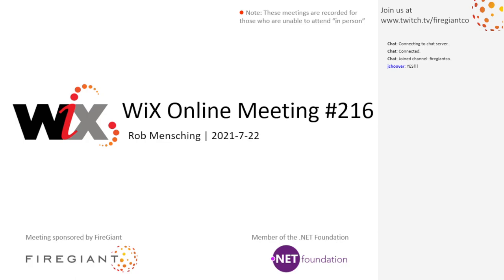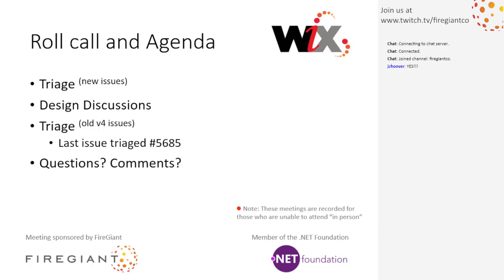What are we doing today? We are doing the same thing we were doing last week, two weeks ago. We'll do a roll call — Jake has already said yes, because we were chatting a little bit before the meeting. If you show up early, you get to talk about random things and chill out. We're going to triage the new issues just like we did before. We have a few of them. We will have our design discussions, and then we will do our old issues. We're picking up on 5685, then we'll do the usual questions and comments.